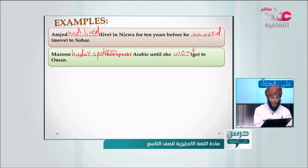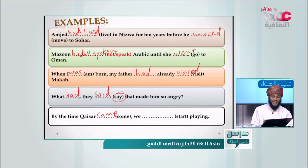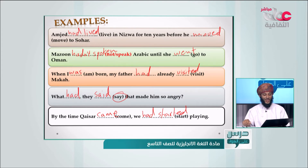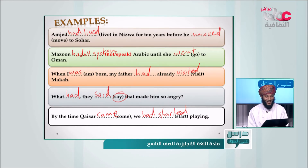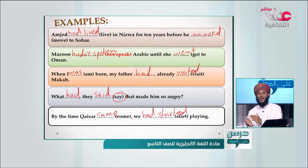Third practice: 'By the time Qaysar came, we had started playing.' So the first action — 'we had started playing' — happened before the second action — 'Qaysar came home.' The past perfect is easy and clear. Now let's move on.